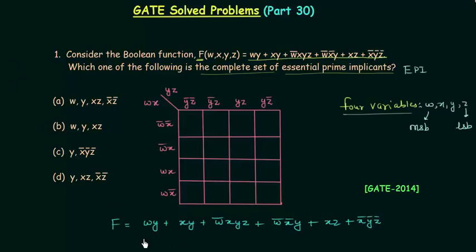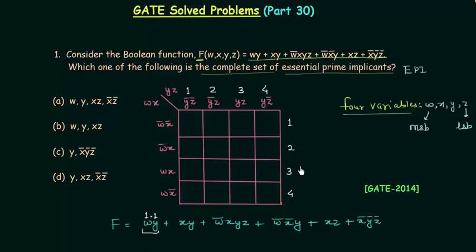From the first product term, we can see w equals 1 and y equals 1. I will call these the first, second, third, and fourth rows, and similarly the first through fourth columns. w equals 1 for the third and fourth rows, and y equals 1 for the third and fourth columns. So we have 1 in those four cells because for them w and y are both equal to 1. From the second product term, x equals 1 and y equals 1. x equals 1 for the second and third rows, y equals 1 for the third and fourth columns, so we have 1 in those four cells.